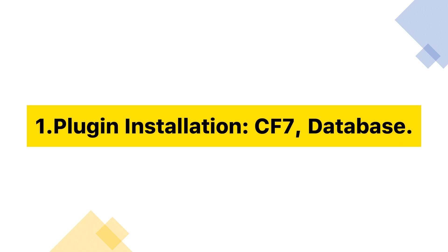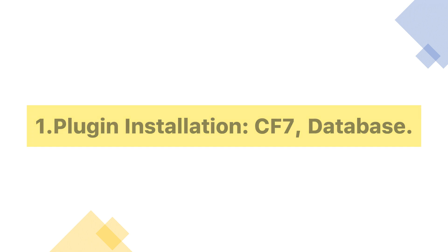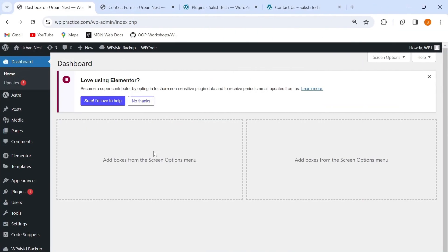The first step is plugin installation. To add a new contact form page to a website, we'll mainly add two plugins. The first one is CF7, which will help us generate the HTML code for a form. The database plugin will help us manage the form data submitted by users effectively and arrange that data in a chronological order. To install the plugins, we need to go to the WordPress dashboard and click on the plugin section.